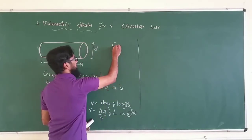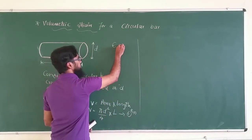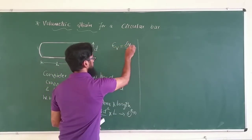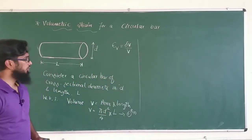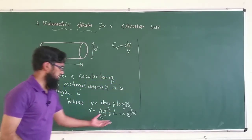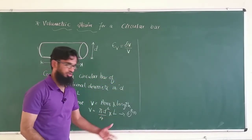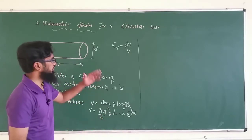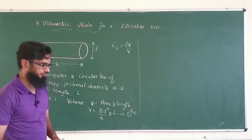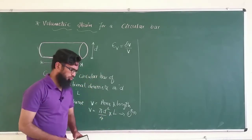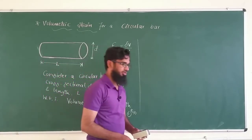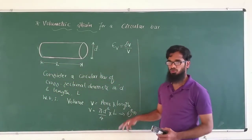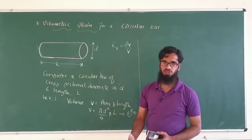To find the volumetric strain, recall that volumetric strain is nothing but the change in volume divided by the original volume. We already have the original volume as Equation 1. Now we need to find the change in volume δV.